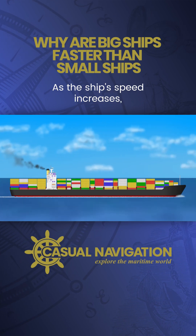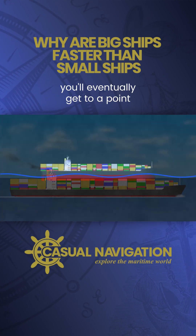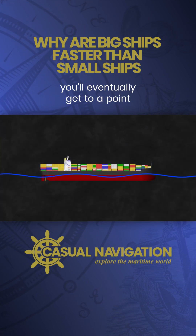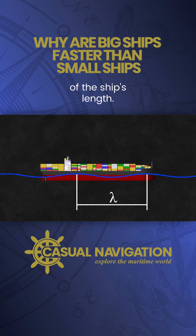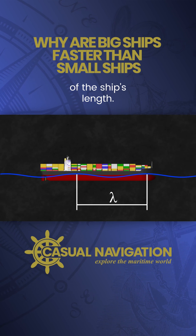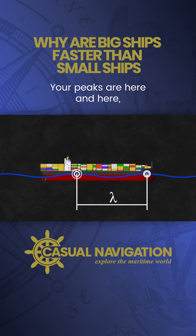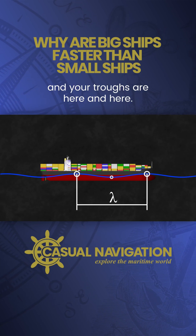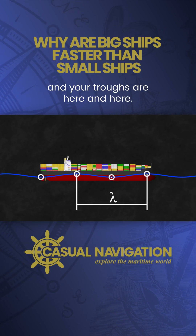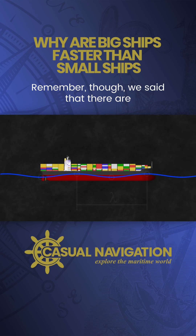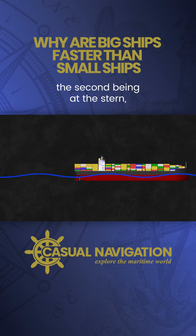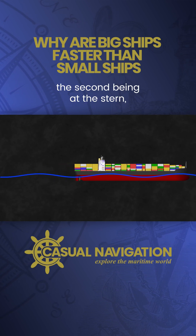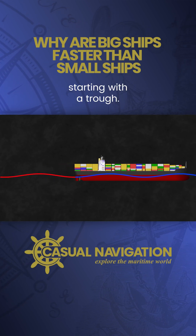As the ship's speed increases, you'll eventually get to a point where the wavelength is two-thirds of the ship's length. Your peaks are here and here, and your troughs are here and here. Remember though, we said that there are two wave systems generated, the second being at the stern, starting with a trough.